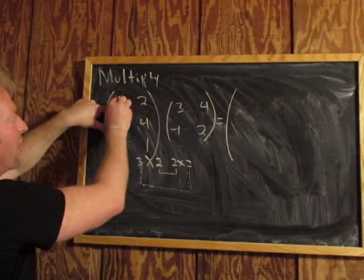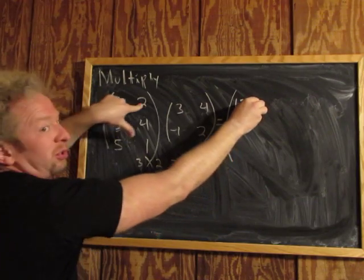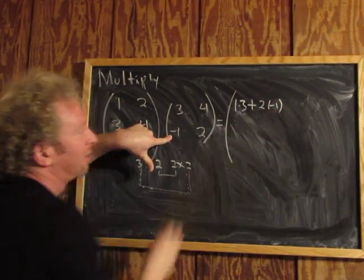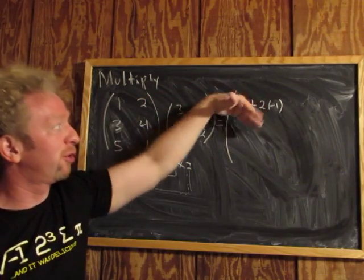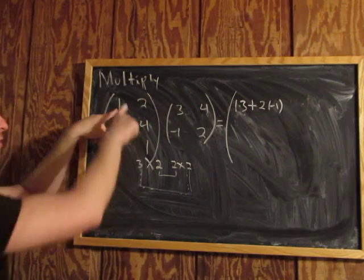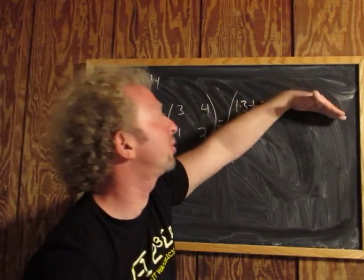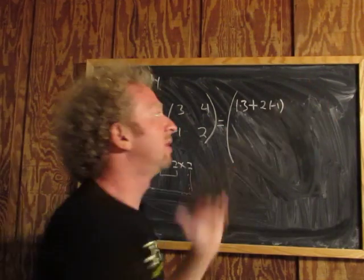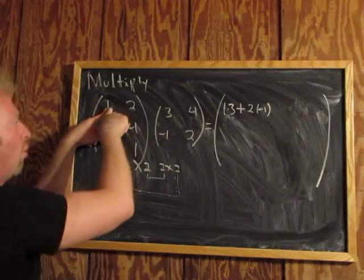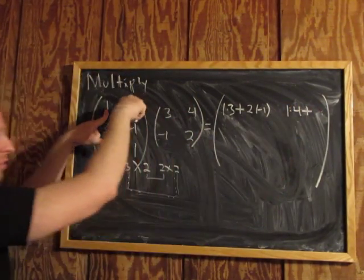So it's 1 times 3, plus 2 times negative 1. We're in the first row, first column — so you use the first row and first column: 1 times 3, plus 2 times negative 1. Now we're still in the first row, but the second column. So we use the first row, second column: 1 times 4, plus 2 times 2.